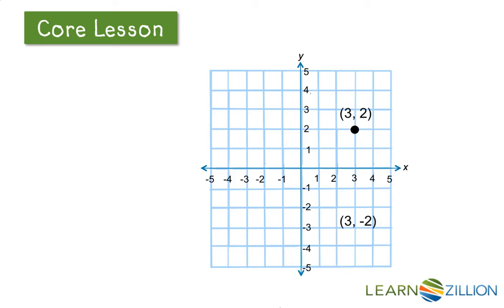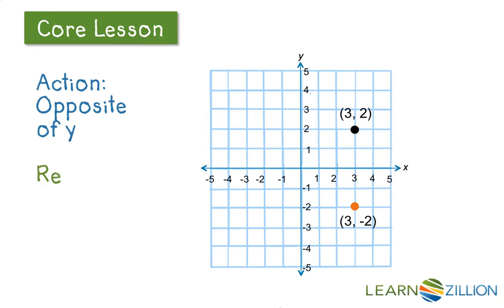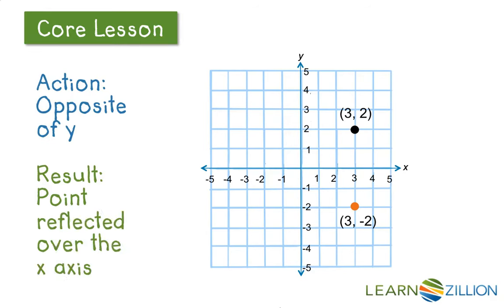Now let's look at this point in quadrant 4, that is 3, negative 2. What is different about these points? With the quadrant 1 point, the y is positive, but in quadrant 4, y is negative. By changing the sign of y, we have reflected that point over the x axis. These points are like the mirror image of each other.